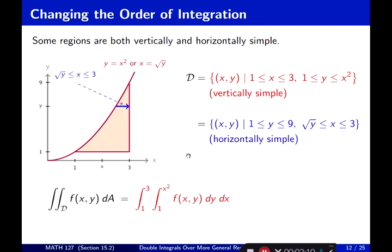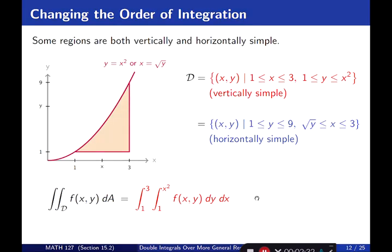Now if I do this horizontally, with the inner integral in the x direction, then x is between square root of y and x equal to 3. And then y changes from 1 to 9. Setting it up: x goes from square root of y to 3, and y goes from 1 to 9.